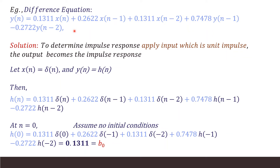Another method of solving the difference equation does not involve the system function. In order to determine the impulse response, we apply an input which is the unit impulse. Then the output becomes the impulse response. Hence x(n) is replaced by delta(n) and the output y(n) becomes h(n). Accordingly, in the given equation, wherever we have a y term it is expressed as h(n), and wherever we have an input it is replaced by delta(n).